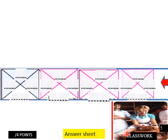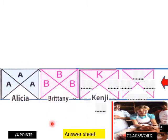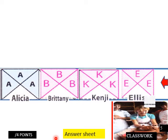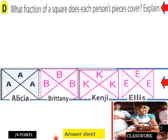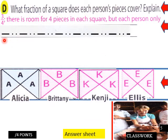Page five of classwork. So these are the fractions of blocks of clay that each student will get. What fraction of a square does each person's pieces cover? Explain.